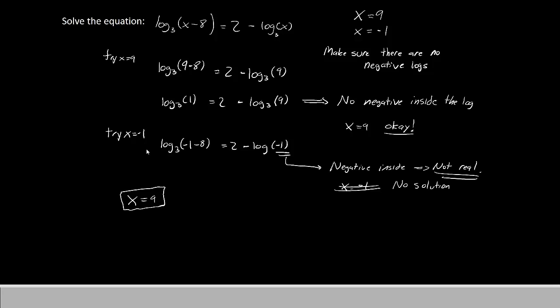So our only answer is going to be x equals 9. If you gave x equals negative 1, they would not count that correct. So that is how you take a logarithm equation, change it into a quadratic equation, and then solve it using methods you already know. But for logarithm problems, make sure that you don't get any negatives inside the logs, or else it's not really a solution. Thank you for watching. We'll see you again next episode.